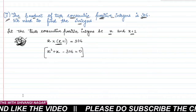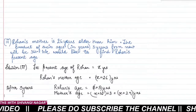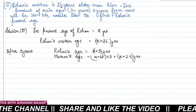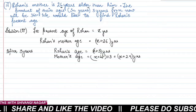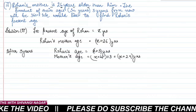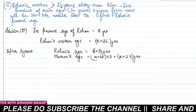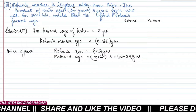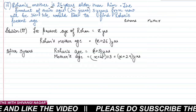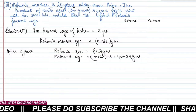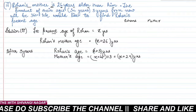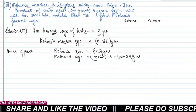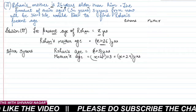The third sub-part is based on ages. We are given that Rohan's mother is 26 years older than him. This gives comparative information about their present ages. Let the present age of Rohan be x years. Since the mother is 26 years older, Rohan's mother's present age is x plus 26 years.